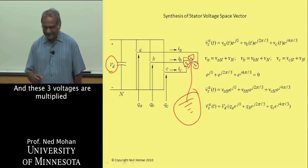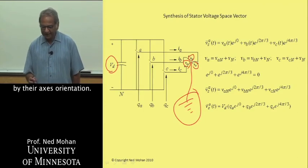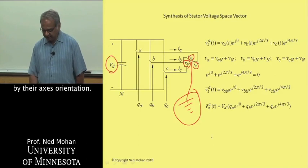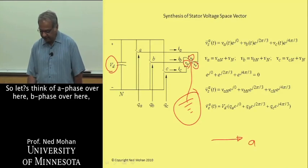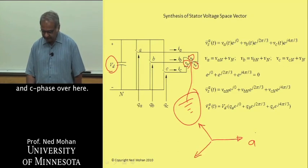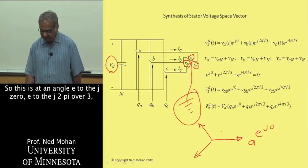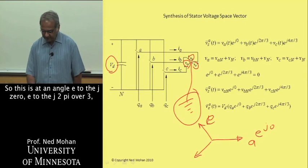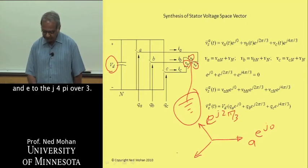These three voltages are multiplied by their axis orientation. Let's think of A phase over here, B phase over here, and C phase over here. So this is at an angle e^(j0), this is at an angle e^(j2π/3), and this is at an angle e^(j4π/3). We measure angles in this direction here.